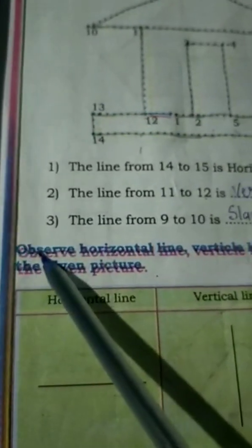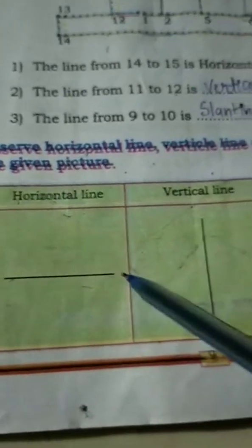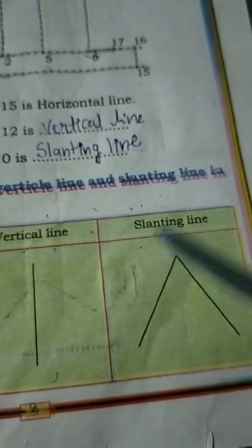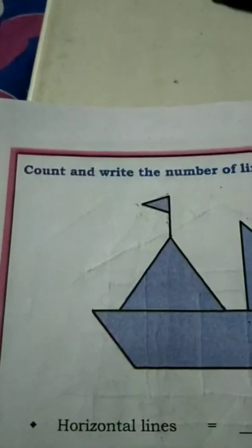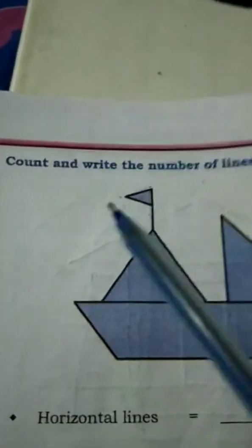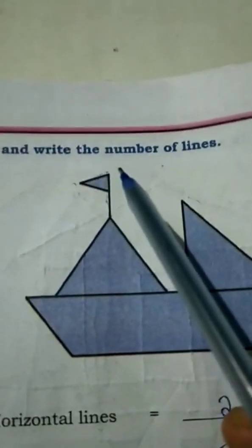Here they have shown you to observe horizontal lines, vertical lines, and slanting lines in the given pictures. You can see horizontal line, vertical line going down, and slanting line just like this. Next, they have asked you to count and write the number of lines.